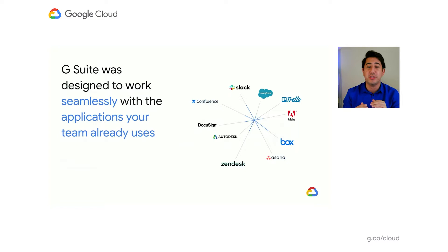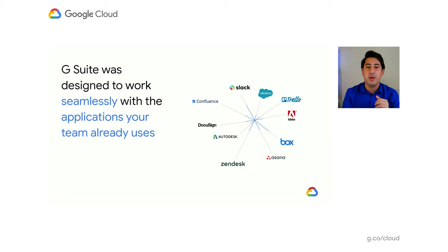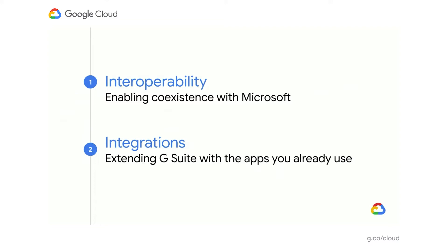But not to worry, we have solutions to help solve these problems. G Suite was designed to work seamlessly with the apps your team already uses. We know that teams require applications beyond G Suite — apps from Slack, DocuSign, Salesforce, and Microsoft. Workers need a single intuitive platform that lets them use their favorite tools without context switching. Businesses need a platform that integrates seamlessly with their existing software stack, while administrators want it simple enough to service and manage. Today we're talking about two areas: how G Suite interoperates and coexists with Microsoft, and how G Suite integrates with other applications in your broader ecosystem.